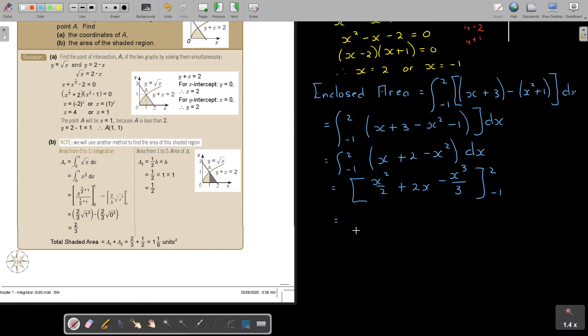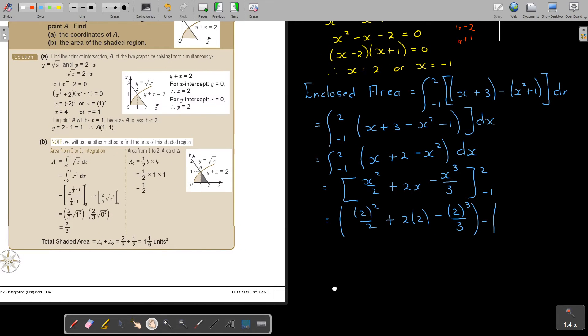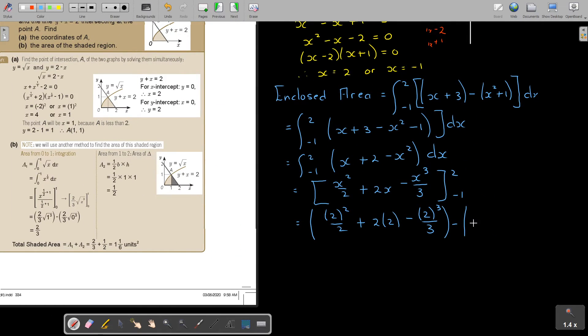Let's see if I can simplify. No, I don't think so. So I think I can go for the substitution. So it's going to be 2 squared over 2 plus 2 times 2 minus 2 to the power of 3 over 3 minus, negative 1 squared over 2 plus 2 times negative 1 minus, negative 1 to the power of 3 over 3.